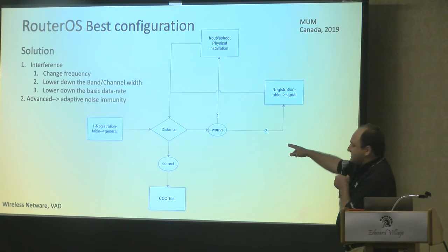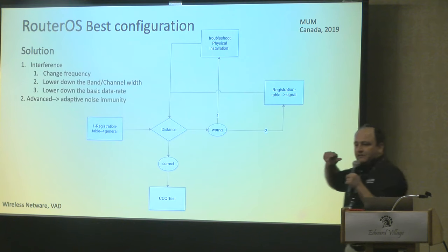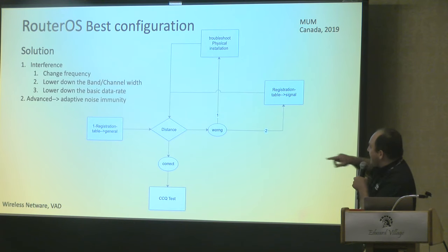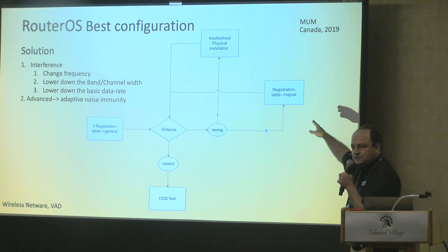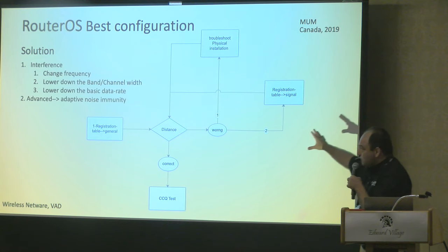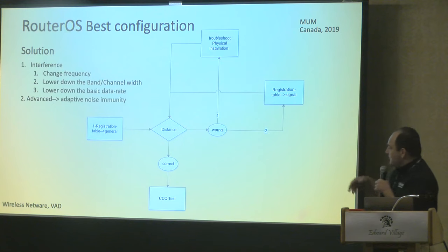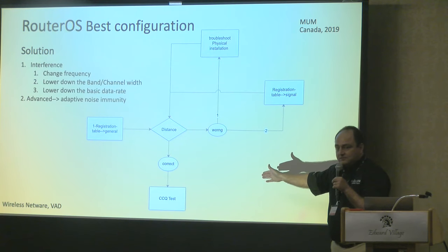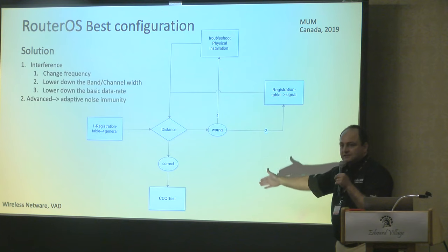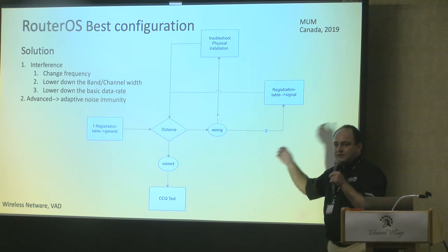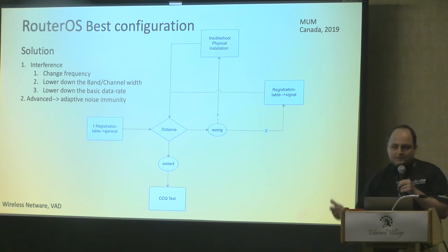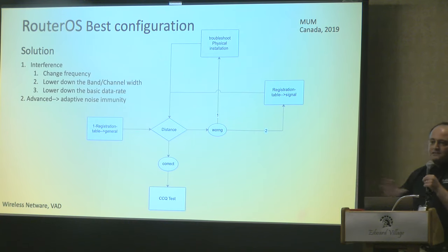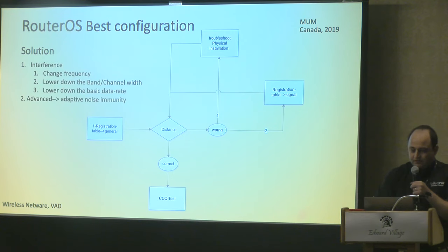So distance is very important. To troubleshoot, you have two paths: the first is physical installation; the second is the router configuration — we covered both. After each change, to confirm the best result, go through the previous process, test CCQ by running a bandwidth test between two links. If you're getting the highest throughput, leave it as is — your link is optimized. Don't go any further.